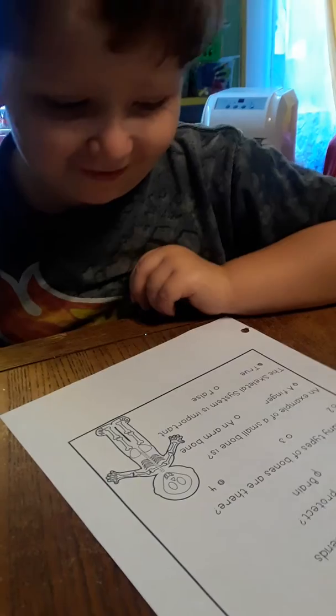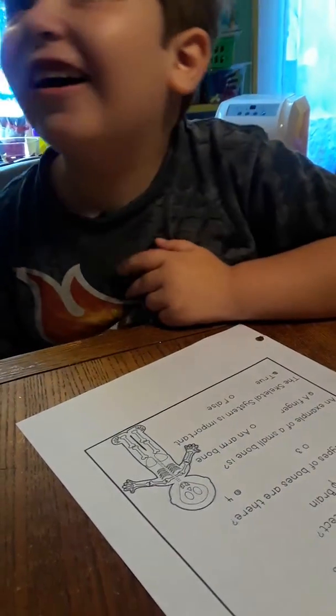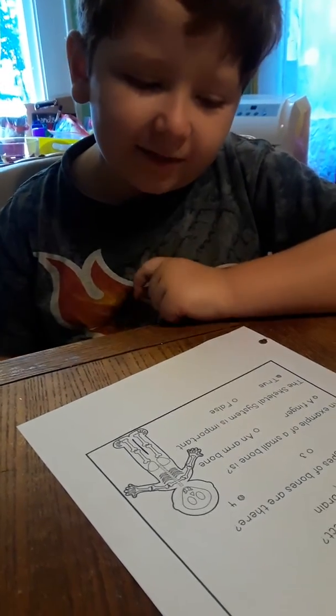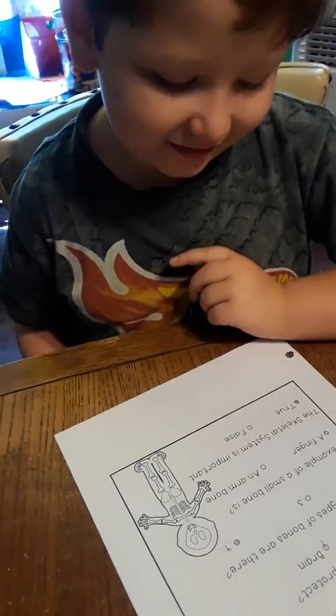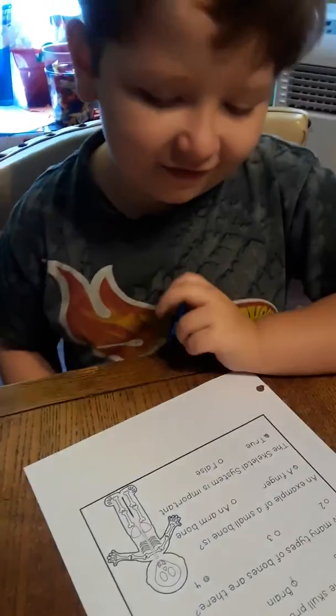The skull protects the brain. The bones are four. They're what? Now you have to read the question for me. How many types of bones are there? It said, and I answered four. You did. Can you tell me what they are though? What are the four types?